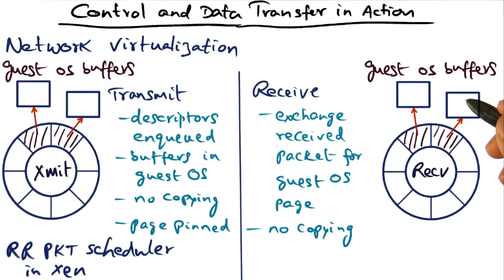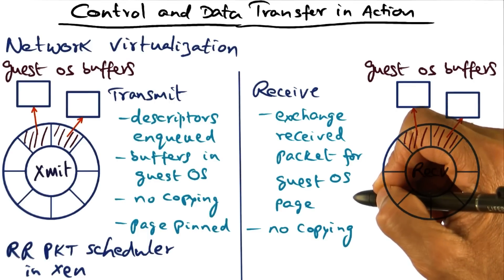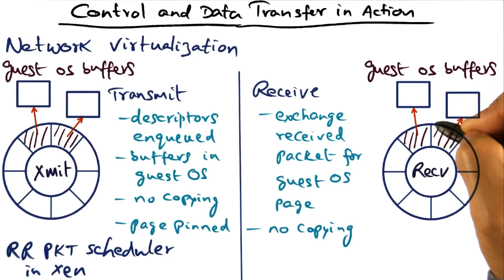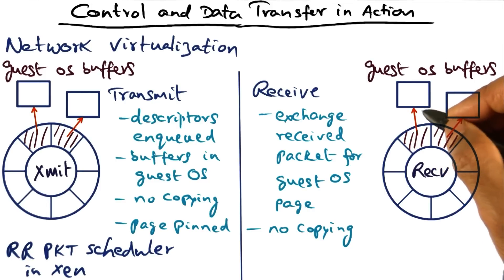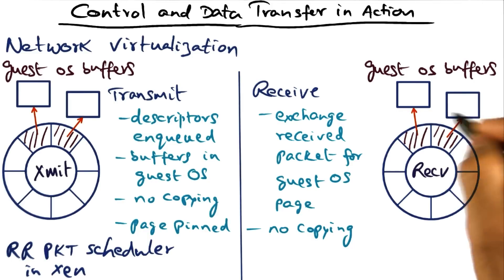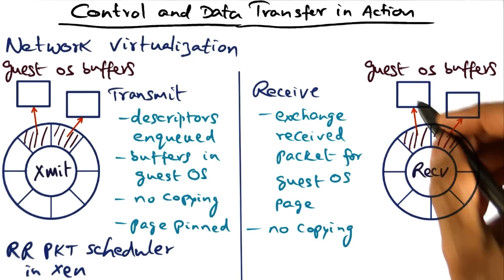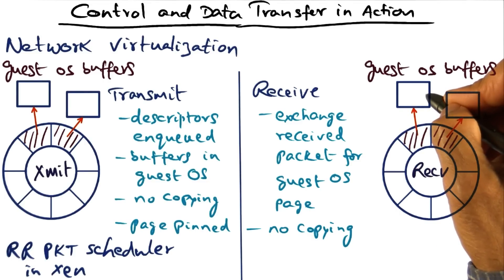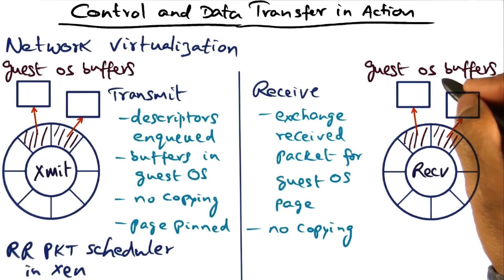When Xen receives a network packet intended for a particular guest, it exchanges the received packet for one of the guest operating system pages that has already been provided to Xen as the holding place for incoming packets. In other words, to make things efficient, a guest operating system will pre-allocate network buffers, which are pages owned by the guest. So when a packet comes in, Xen can directly put the network packet into the buffer owned by the guest operating system and enqueue a descriptor for that particular guest.